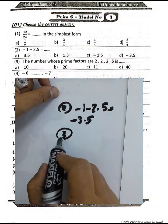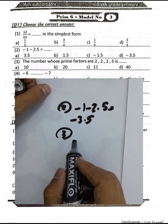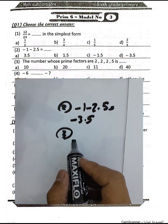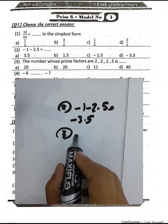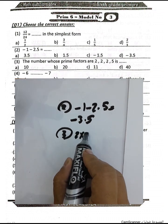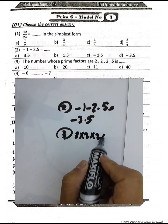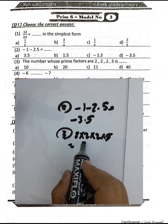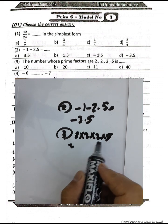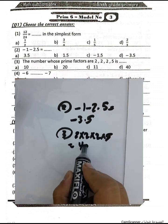Question number 3: The number whose prime factors are 2, 2, 2, and 5. We can find it by multiplying 2 times 2 times 2 times 5. 2 times 2 is 4, times 2 is 8, and 8 times 5 equals 40.